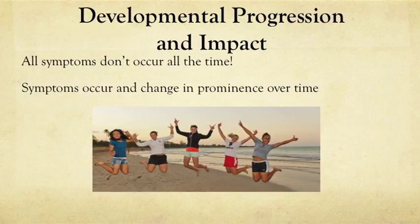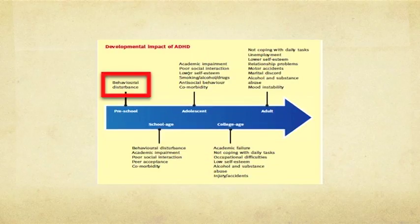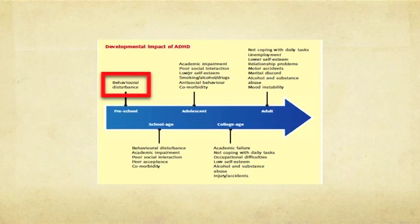In terms of developmental progression and impact, not all symptoms occur all the time — they change in prominence over the developmental age range. At the preschool age range, roughly four to six years old, the primary symptoms are behavioral disturbance: hyperactivity, fidgetiness, wiggliness, and running around. That's what we're seeing at the youngest ages.